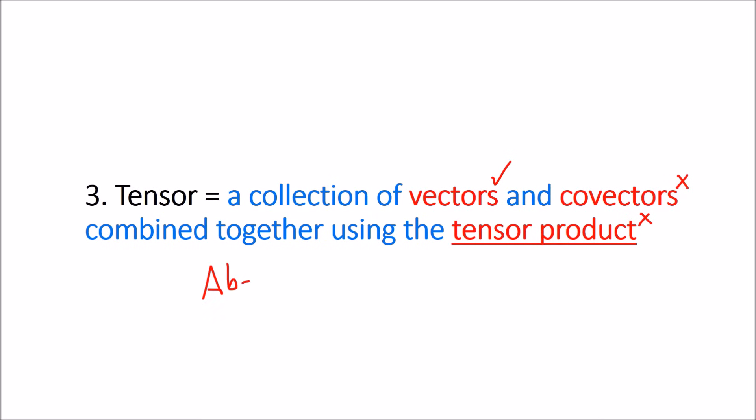So this is what I call the abstract definition of a tensor. This is really the best definition of a tensor we can come up with. And I'll get to this definition later on in the video series once we have the basics down.